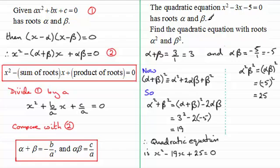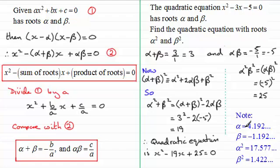Out of interest, if you were to work out alpha and beta using the quadratic formula, alpha turns out to be approximately 4.192 and beta approximately −1.192. The roots of the new quadratic equation turn out to be approximately 17.577 and 1.422, which are the squares of alpha and beta respectively.